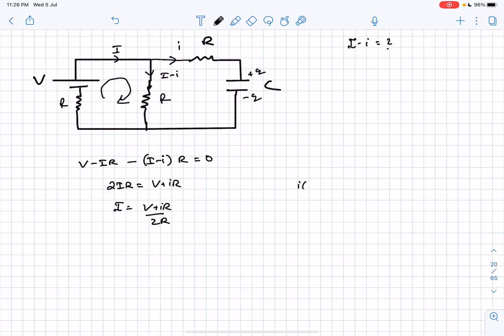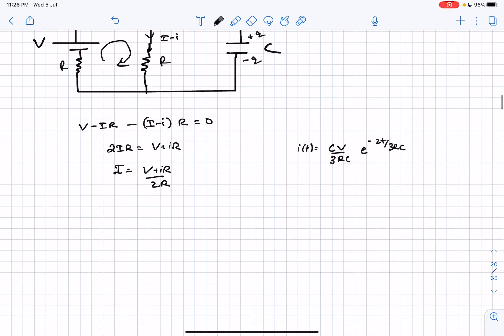As we have i as a function of time, we can substitute it into this equation. What we want is I minus small i, which is V minus iR divided by 2R.